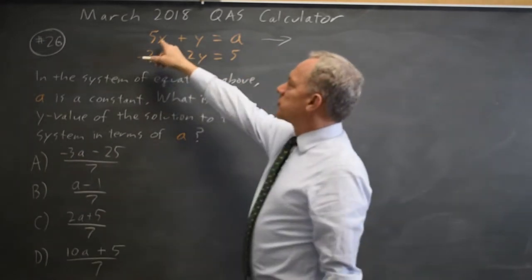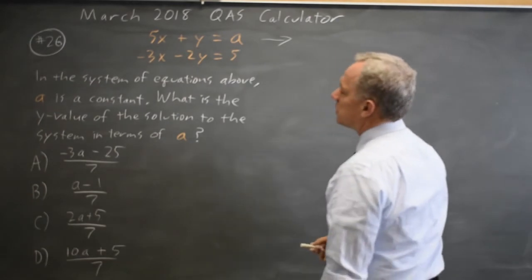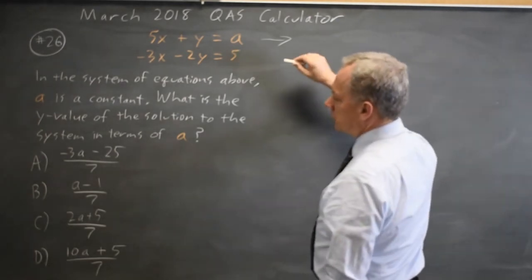I notice that if I multiply the first equation through by 3 and the second equation through by 5, my x components will cancel.